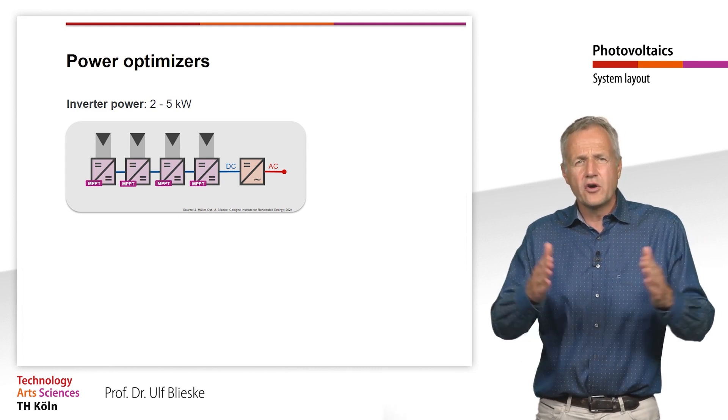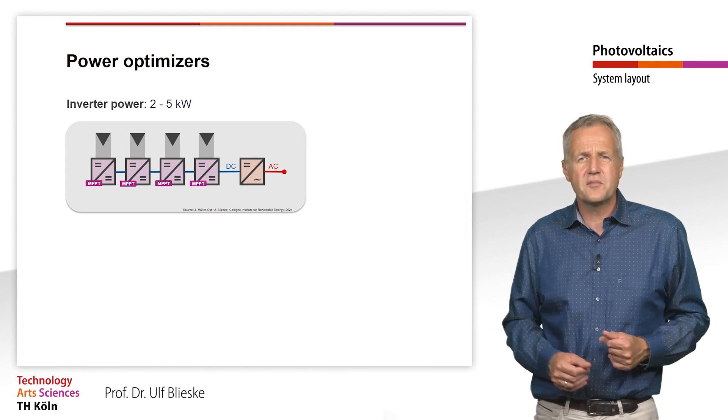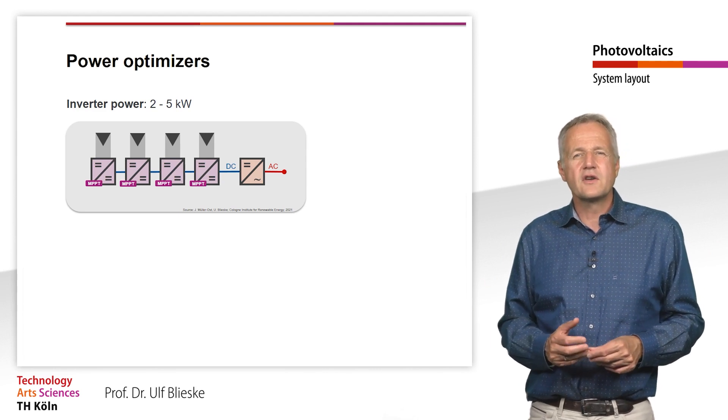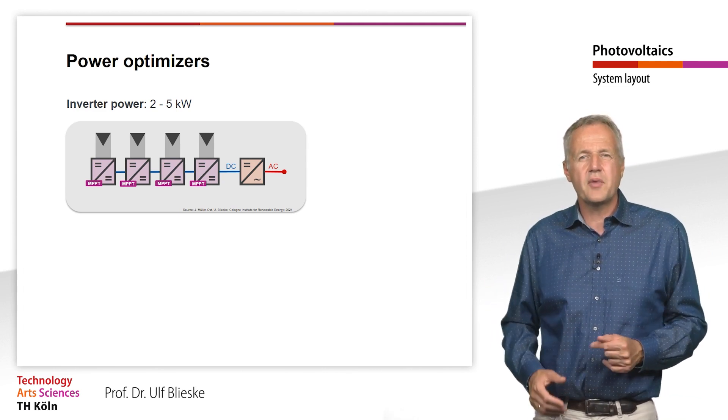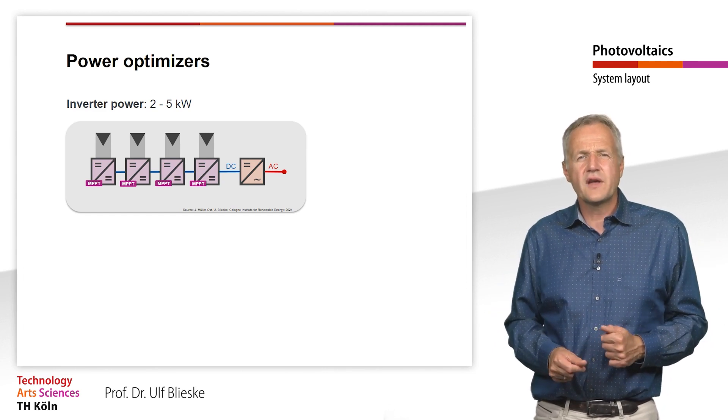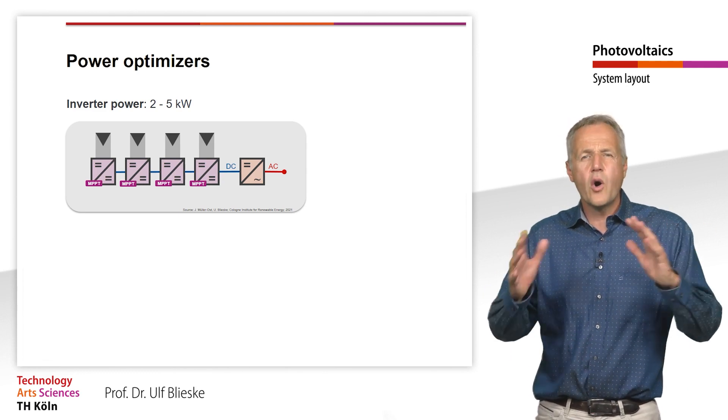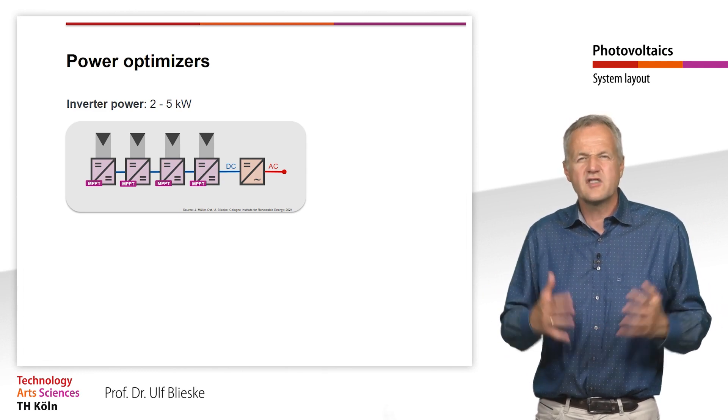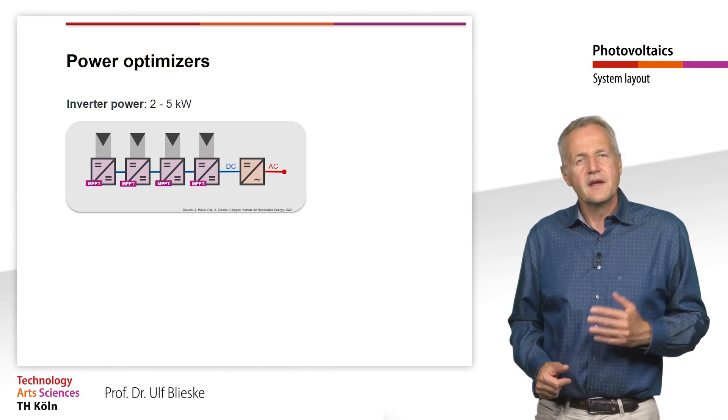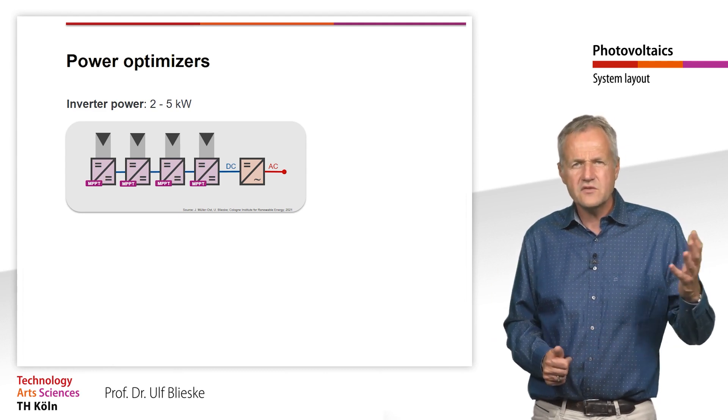The series connection of the modules is also one of the main advantages of the power optimizers concept compared to module inverters. With module inverters, the modules are connected in parallel, leading to higher power losses in the cable. The voltage of a system with string inverters are usually higher than 230V, leading to lower ohmic losses in the cables. Furthermore, power losses due to DC current are lower than those to AC current at comparable voltage level.